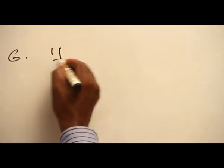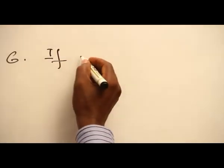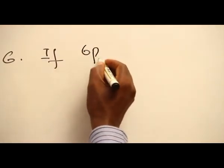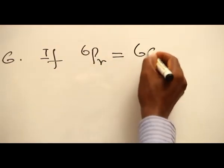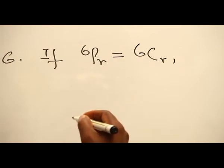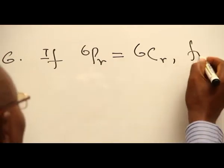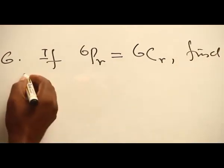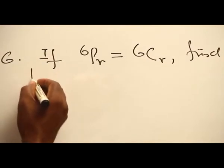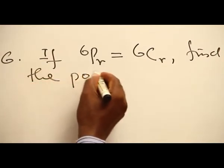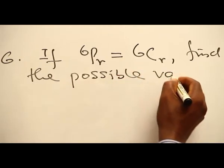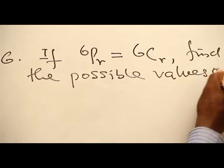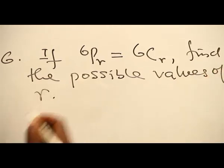Example: If 6Pr equals 6Cr, find the possible values of r.